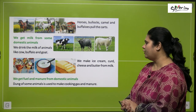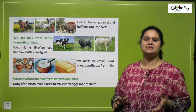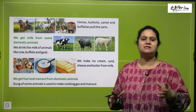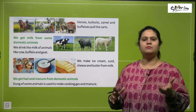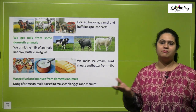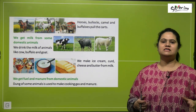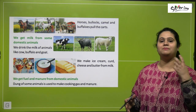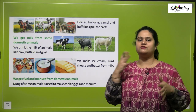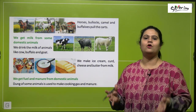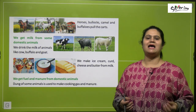We get fuel and manure from domestic animals. The dung of animals — their poop — is a very useful manure. It is used to make fertilizers for plants, providing nutrition to them. Also, when dung cakes are dried, they are used as fuel for cooking. So dung of animals is used as cooking fuel and as manure.